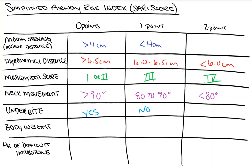Almost to the end: body weight. Less than 90 kilograms is worth 0 points, 90 to 110 kilograms is worth 1 point, and greater than 110 kilograms is worth 2 points. I'll be honest — I don't have a good explanation for this. A patient with normal proportions and no increased BMI would technically be a risk factor; for example, a 6'5" lean basketball player weighing over 110 kilograms. I haven't been able to find literature to explain why, but it is part of the scoring system.